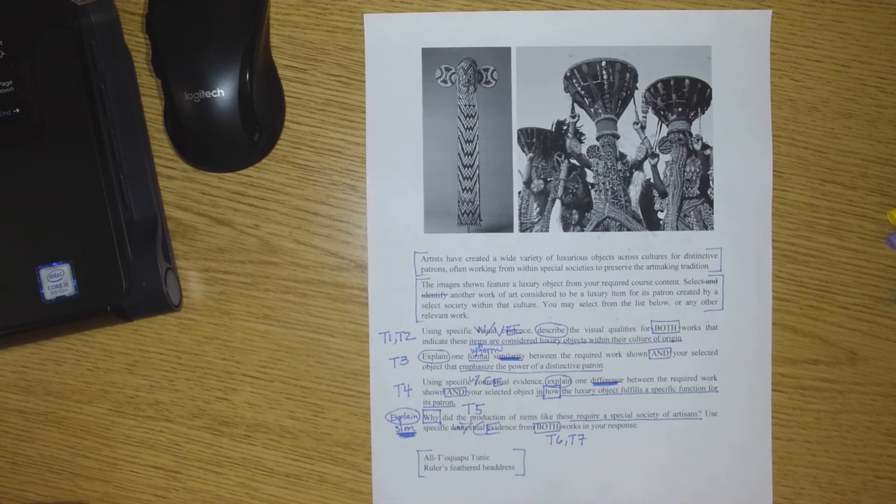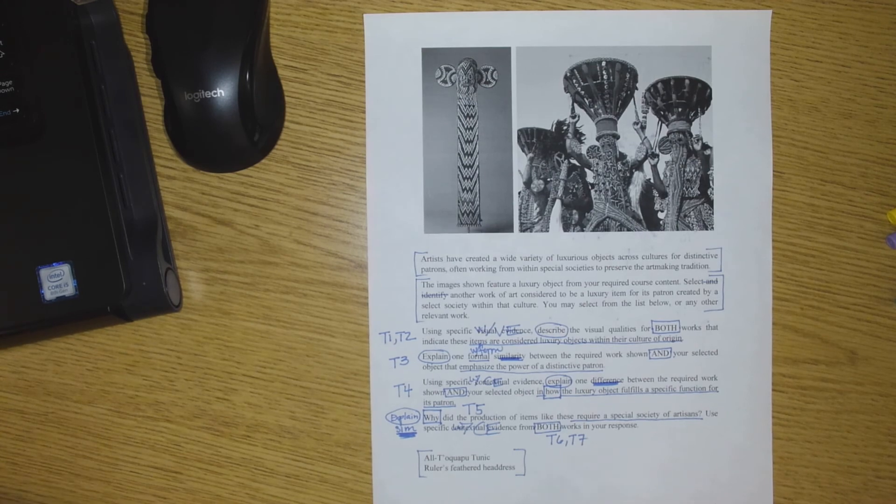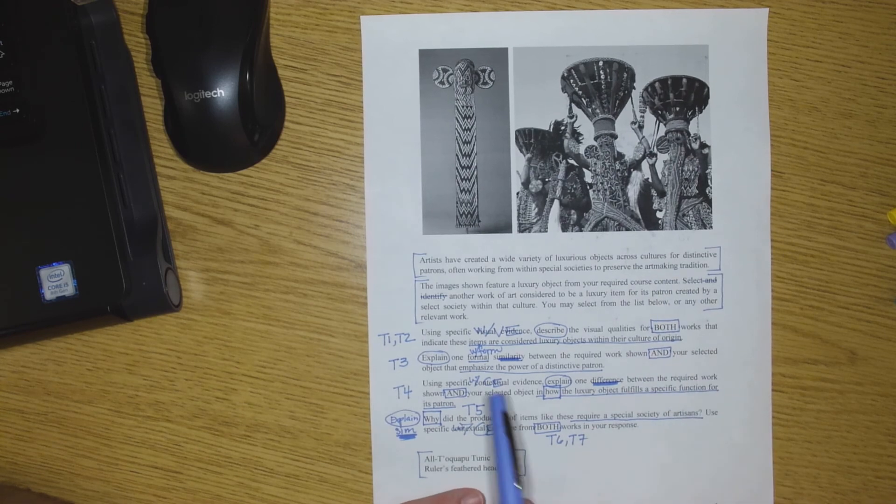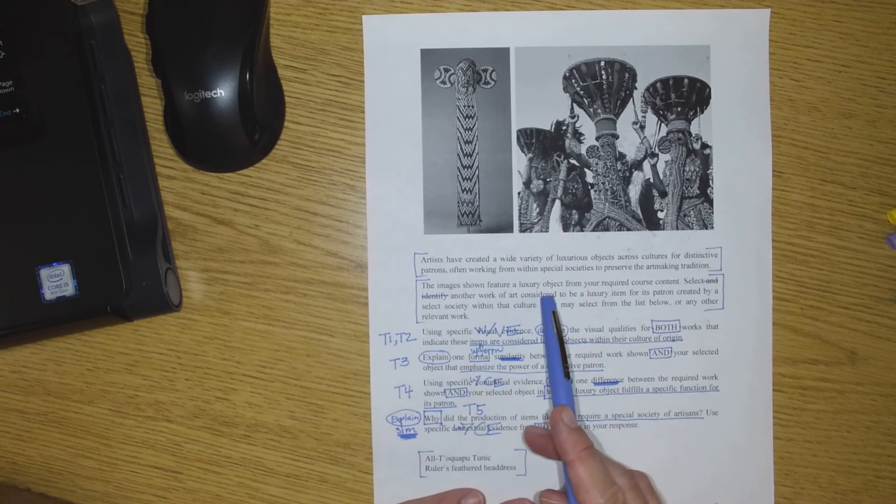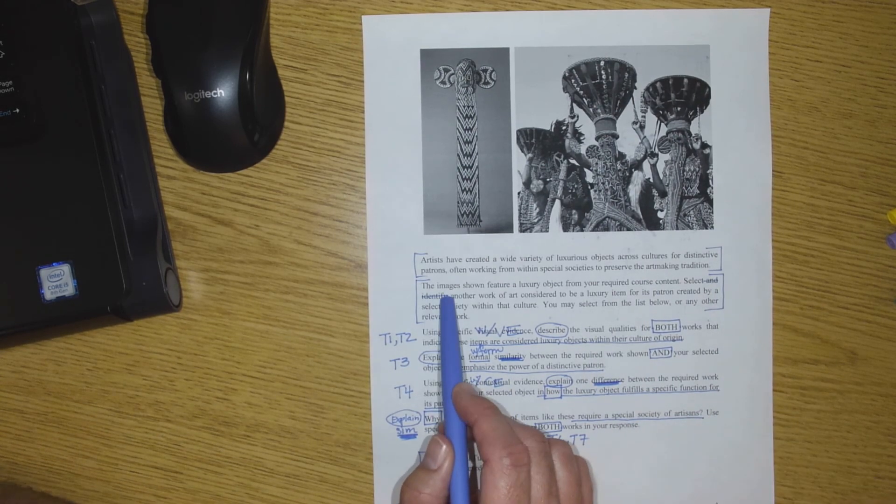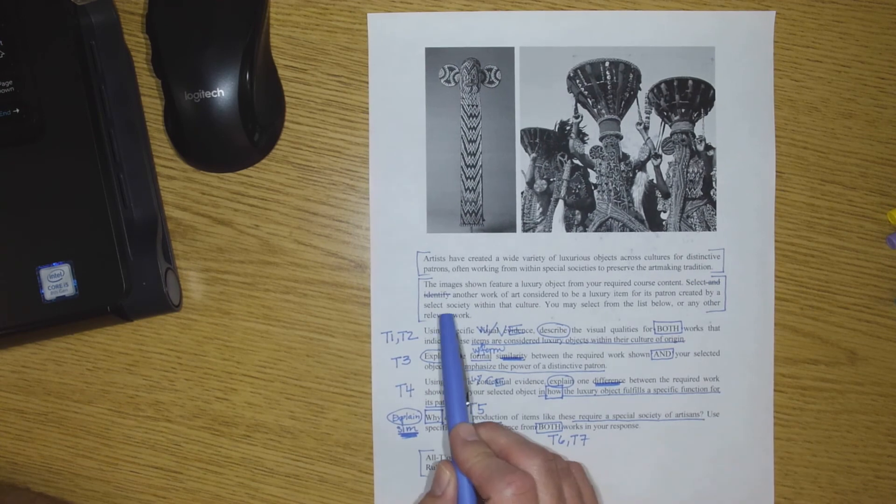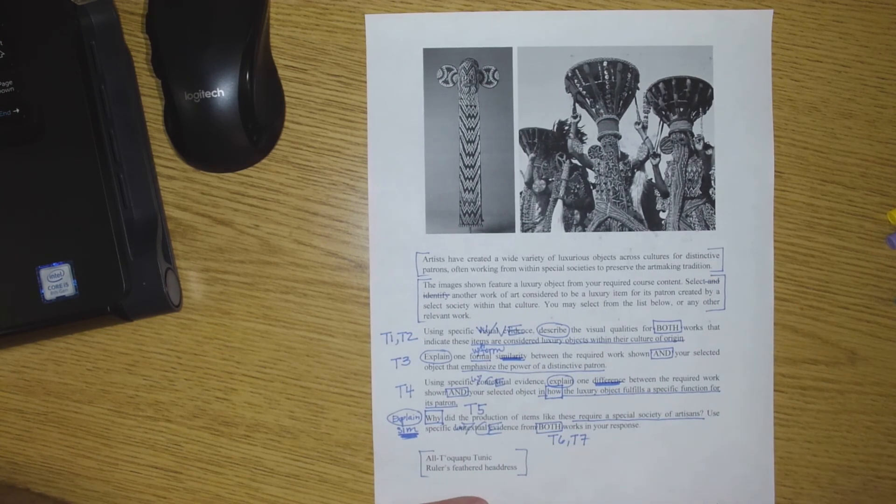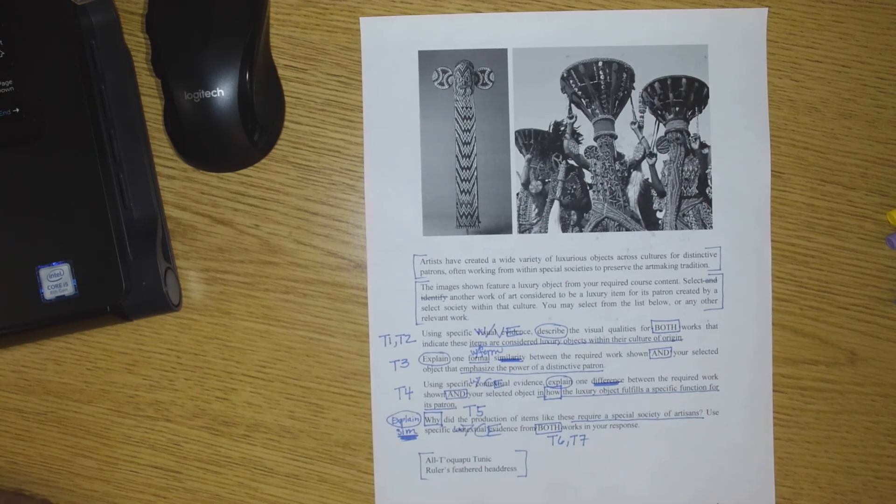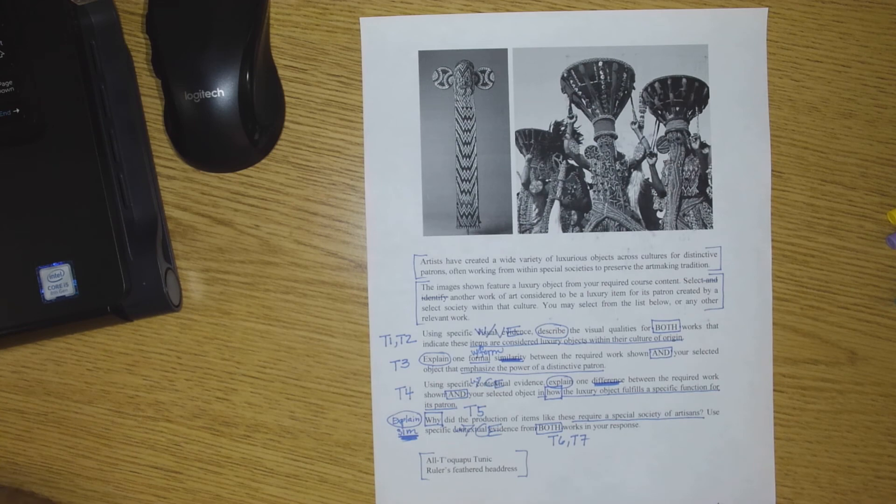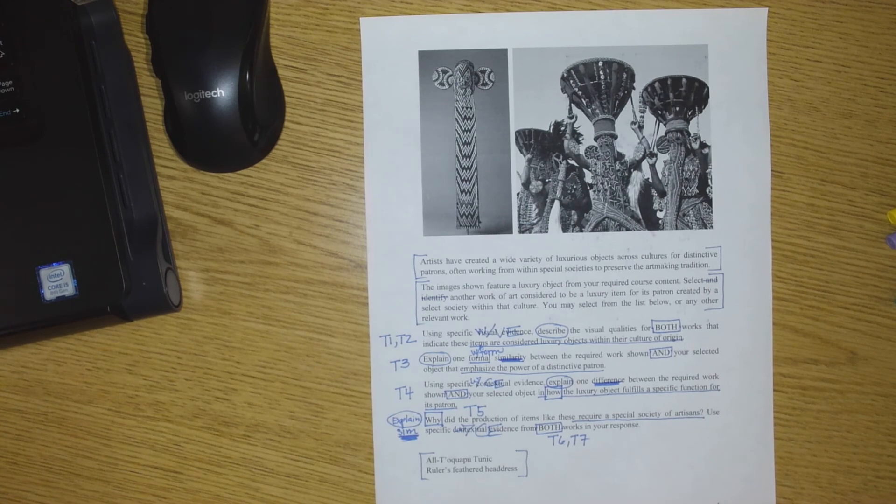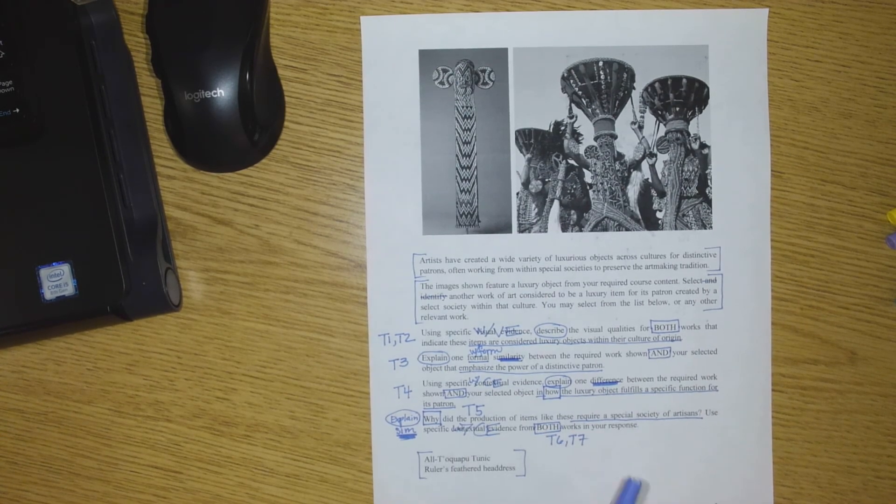So why don't I read through it with you and then talk to you about why I did this this way. It says, artists have created a wide variety of luxury objects across cultures for distinctive patrons, often working from within special societies to preserve the art-making tradition. The images shown feature a luxury object from your required course content.